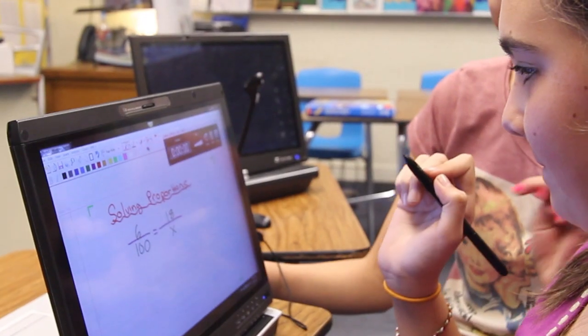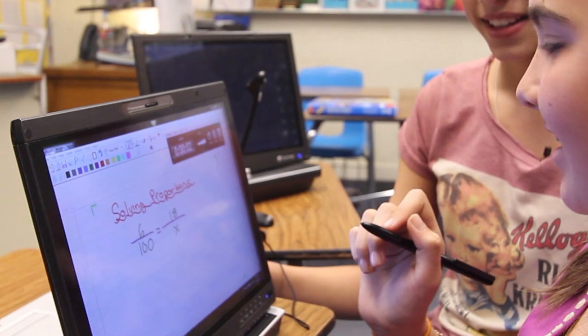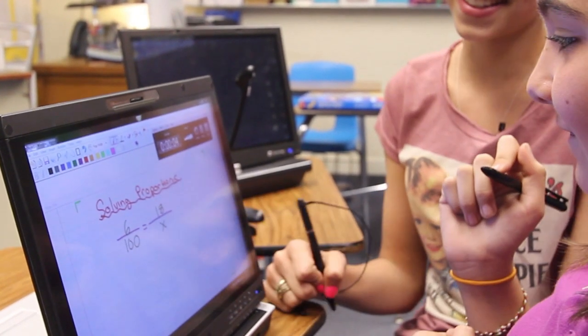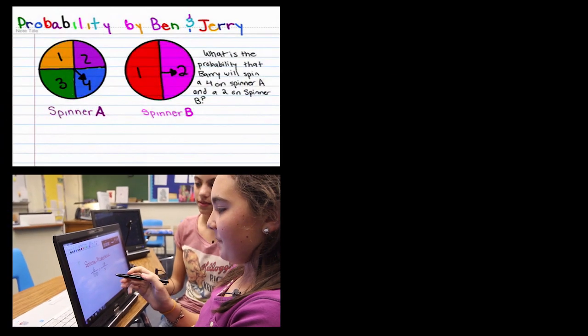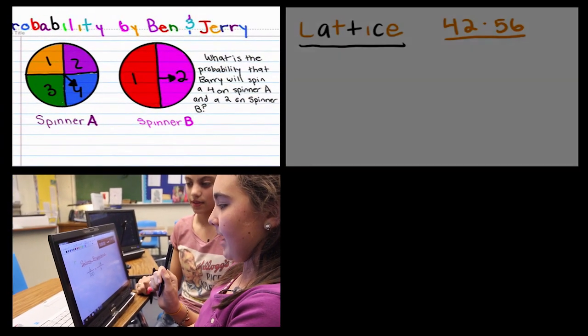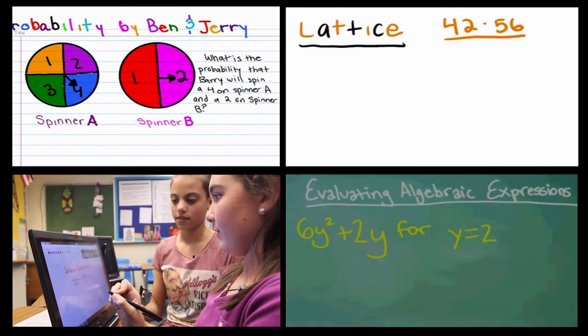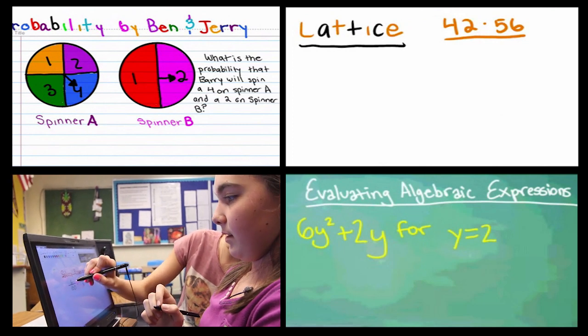And the kids teaching kids aspect comes out of this more so because other kids in the class were watching and they jumped on that. Hi, this is Phineas and Ferb and today we're going to show you how to solve a proportion. Today we're going to teach you how to do probability. How to do lattice multiplication. I'm going to teach you how to evaluate algebraic expressions.